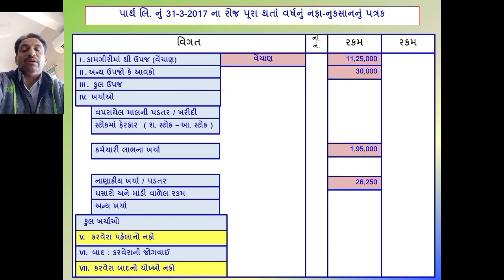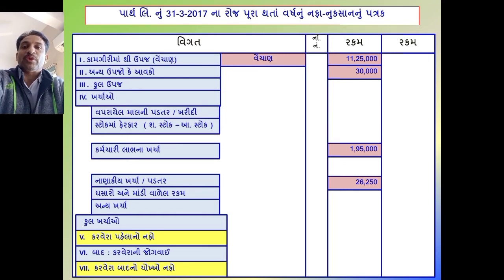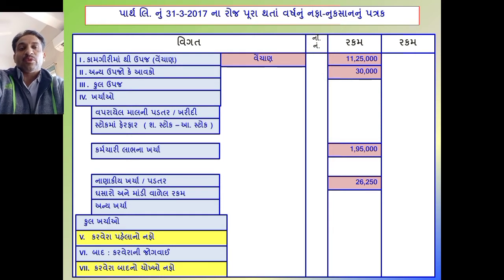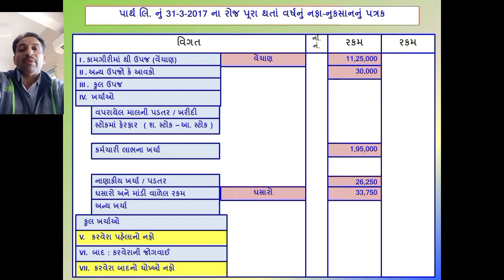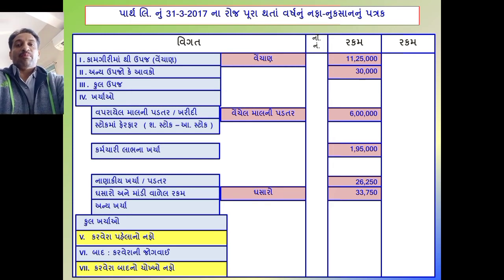ઉપજ માટે અહીં એક લાઇન છોડી છે. જ્યારે નમૂનો તૈયાર કરો ત્યારે અન્ય ઉપજ કે આવક માટે નીચે ત્રણેક લાઇન છોડી દો. દરેક સિર્સકની નીચે બે-ત્રણ લાઇન છોડી દેશો. માવાસ રૂ. 33,750 - વેચેલ માલની પડતર. ખરીદી સામે નોંધવાનું છે, જે પાકા સરવૈયાની વિગત છે. આ રીતે નફા-નુક્સાન પત્રકની તમામ વિગતો ગોઠવી.